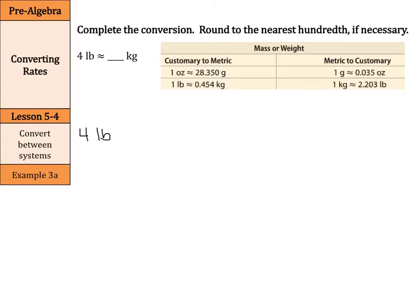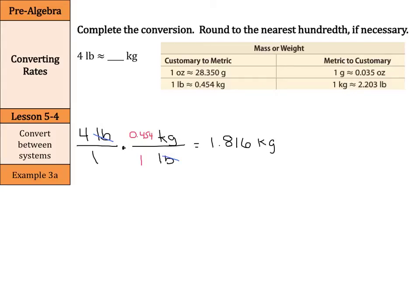We can have our 4 pounds over 1. As we multiply this, our pounds are going to be on the bottom and our kilograms on top. We're going from customary to metric, so it makes the most sense to put in 1 pound equals 0.454 kilograms. That way my pounds cancel out, and I can multiply 4 times 0.454 and get 1.816 kilograms. Rounding to the nearest hundredth — that's the hundredths place with the 1 — look one digit to the right: that 6 rounds it up to 1.82 kilograms.